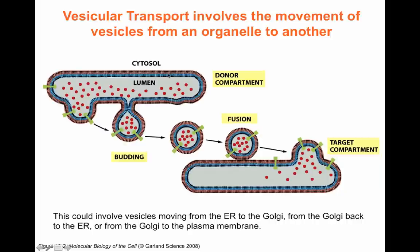Cargo in the vesicles could be of two different types. One type consists of soluble proteins that will be loaded inside the vesicle in the soluble lumen. The other type consists of proteins that are embedded in the membrane. So transported vesicles will carry both soluble as well as membrane-bound proteins.